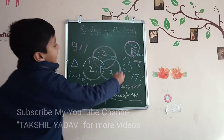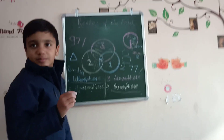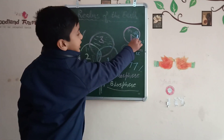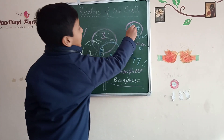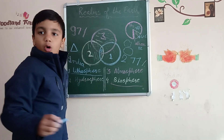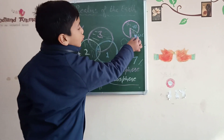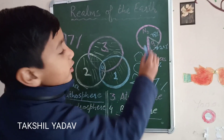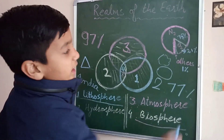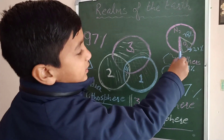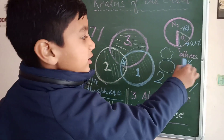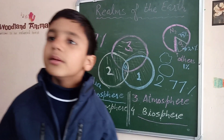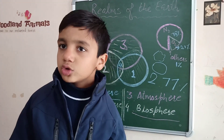In the composition of our atmosphere, 78% is occupied by N₂ or nitrogen, 21% is occupied by O₂ or oxygen, and 1% is occupied by other gases including carbon dioxide, helium, hydrogen and ozone.